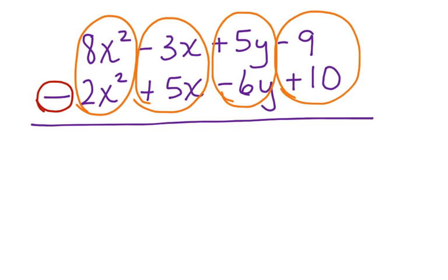So, we can start with the constants at the end. We can say negative 9 minus 10. You see, this has to get applied over here, too. Negative 9 minus 10 is a negative 19.